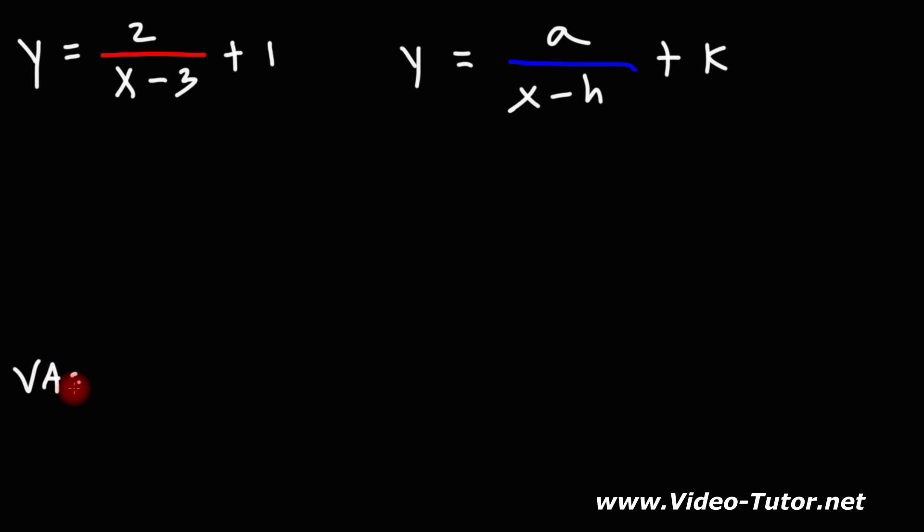The vertical asymptote is x equals h. The horizontal asymptote is y equals k.